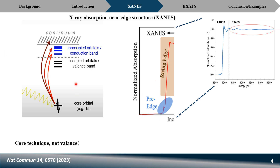When the core electron is excited, a hole is created, which is a very unstable state. Electrons from higher levels come down to fill this hole. The division between pre-edge and rising edge is based on where the excitation occurs: if electron excitation occurs to the unoccupied orbitals, it gives rise to the pre-edge region; if excitation occurs to the continuum region, it gives rise to the rising edge region.